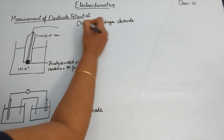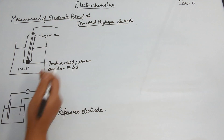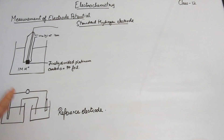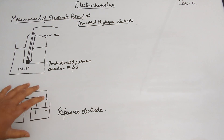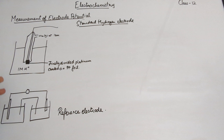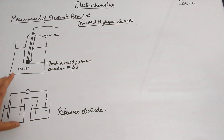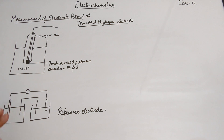What we do is connect one of these reference electrodes to the electrode of the half cell whose electrode potential we want to find, and then we are able to calculate and figure out the electrode potential of the unknown half cell. So let's talk more about the standard hydrogen electrode.